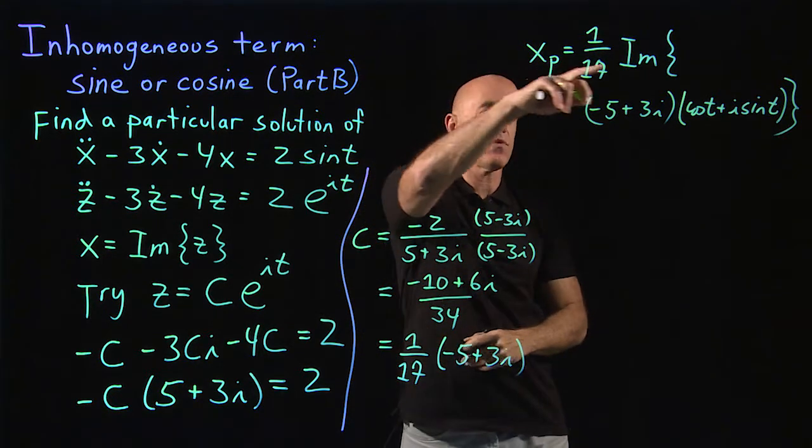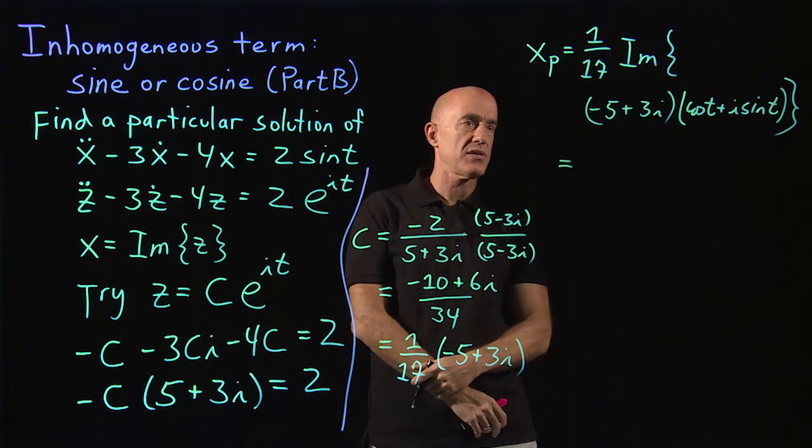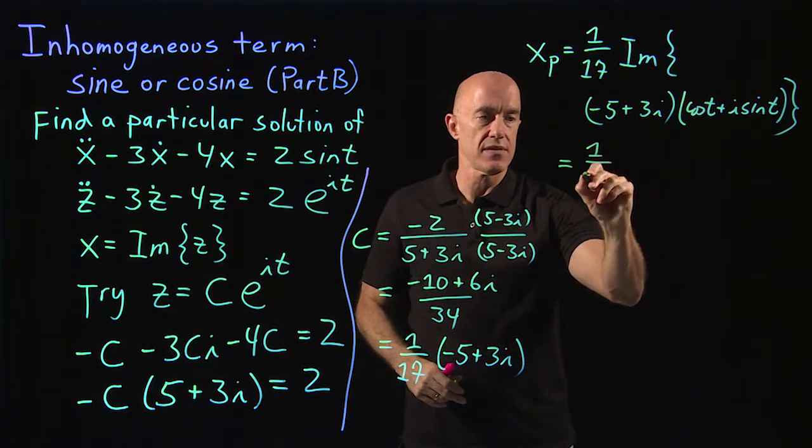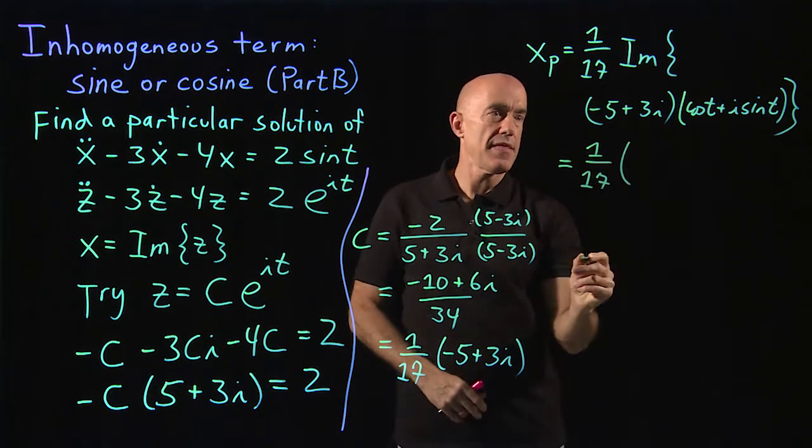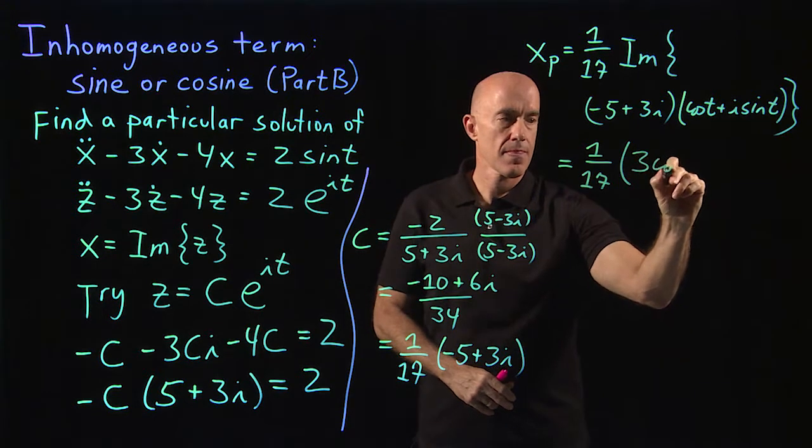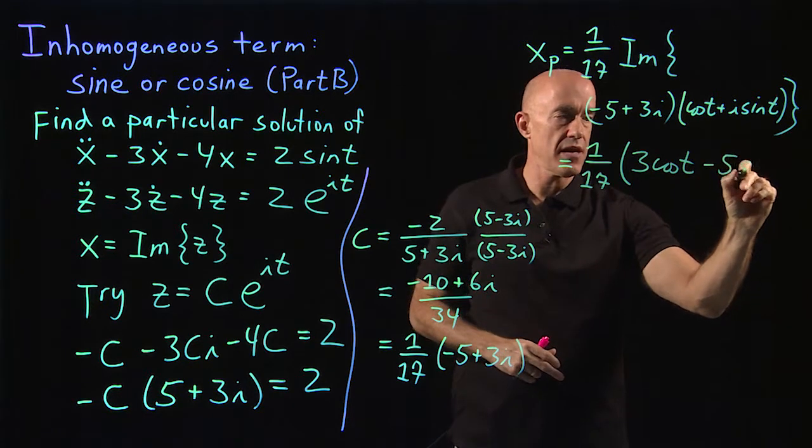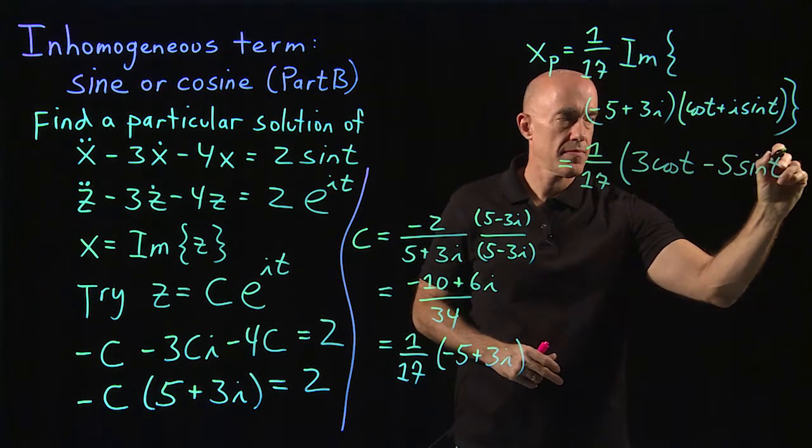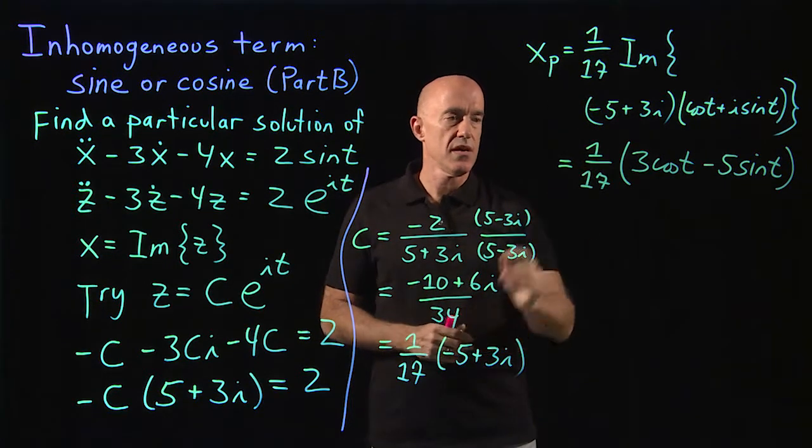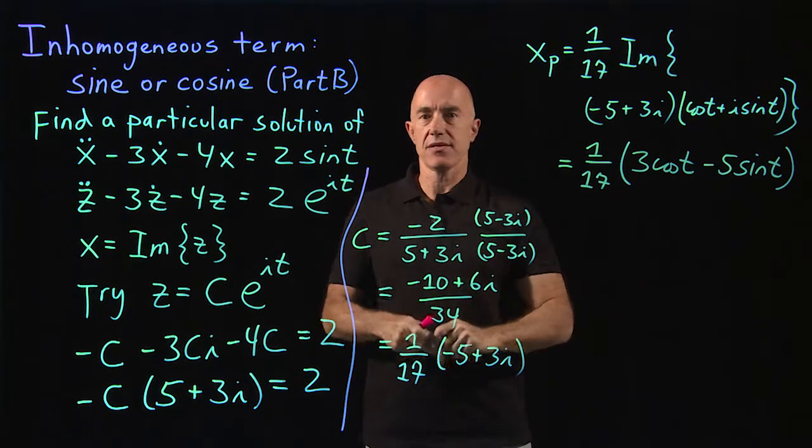That's our solution then for the particular solution. So now all we need to do is to pick out the imaginary part. We have a 1 over 17, and then we have a 3 cosine t and we have a minus 5 sine t. And then that's our solution for the particular solution. So you can check that we got the same answer as last time.